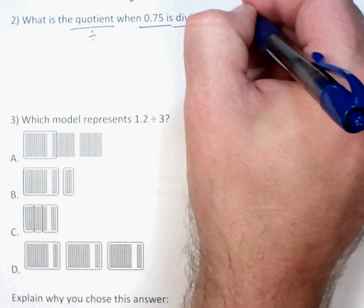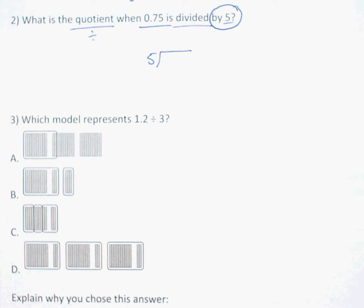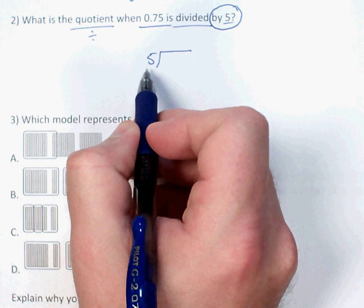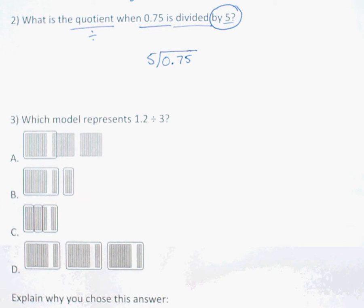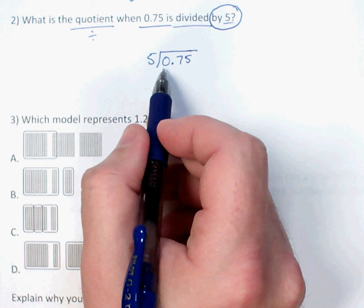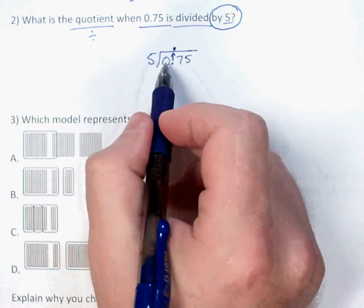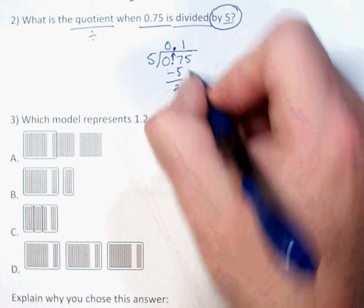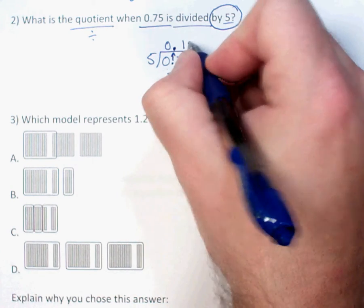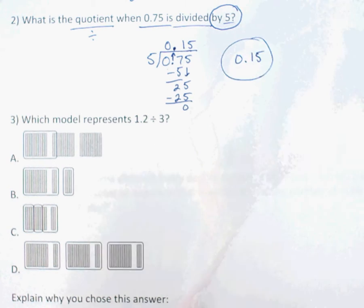Here's the key: whatever I'm dividing by goes on the outside. In fraction form, that would always be my denominator. So seventy-five hundredths is what I'm actually dividing. I put the decimal up top first so I don't have to worry about it at the end. Five won't go into zero, then five goes into seven one time; one times five is five. Pull down the five; five goes into 25 five times, no remainder. My answer is fifteen hundredths — 0.15.